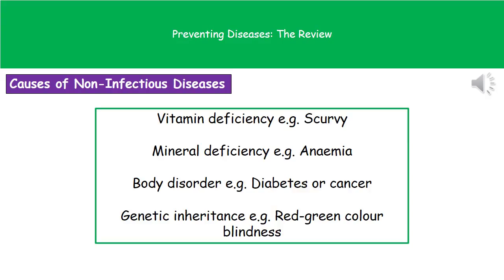The first cause is a deficiency of certain vitamins. The example given is scurvy — which is why the Pirates of the Caribbean films aren't reality. If they were, Orlando Bloom and Johnny Depp wouldn't have looked as good, because without enough vitamin C they'd have had lots of sores and missing teeth as a result of scurvy. But that doesn't sell so well in film.